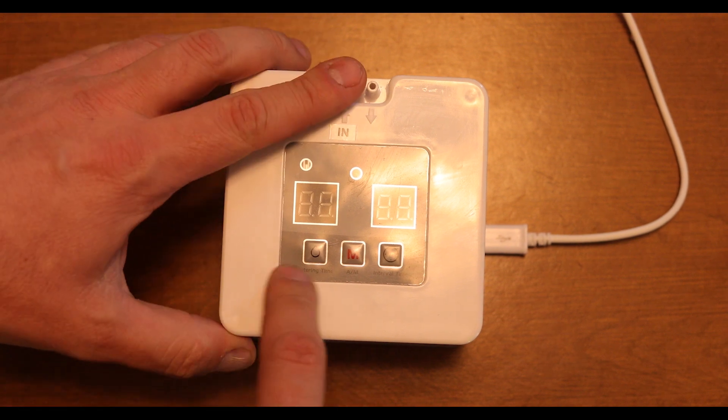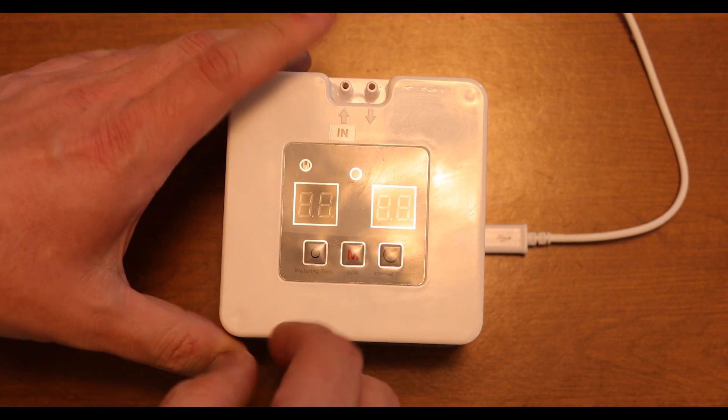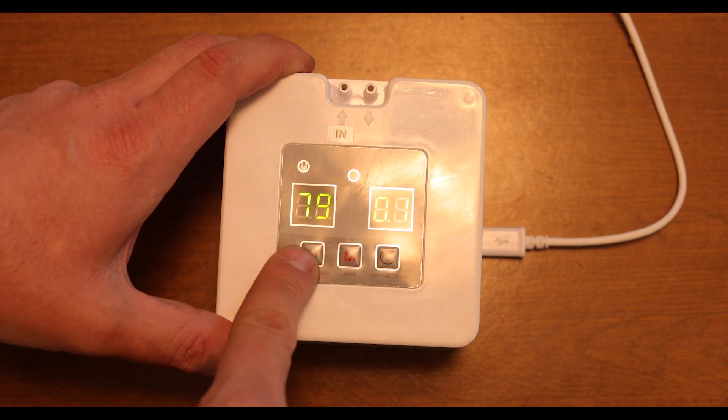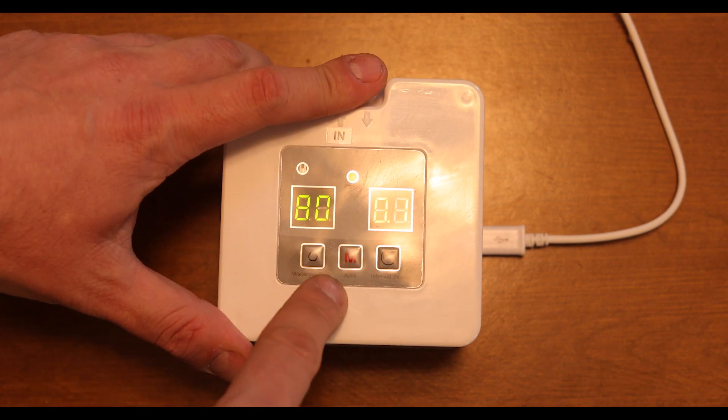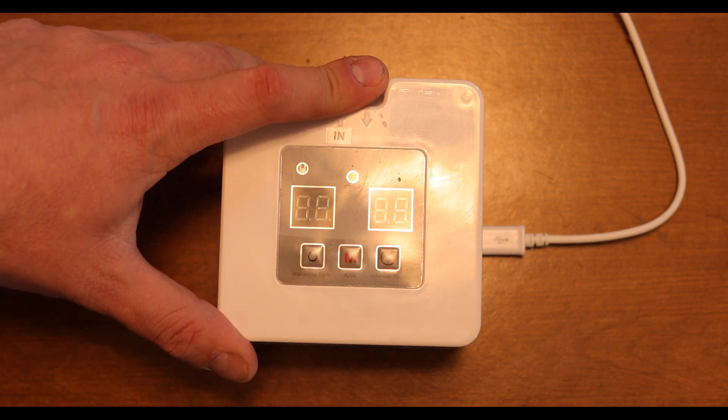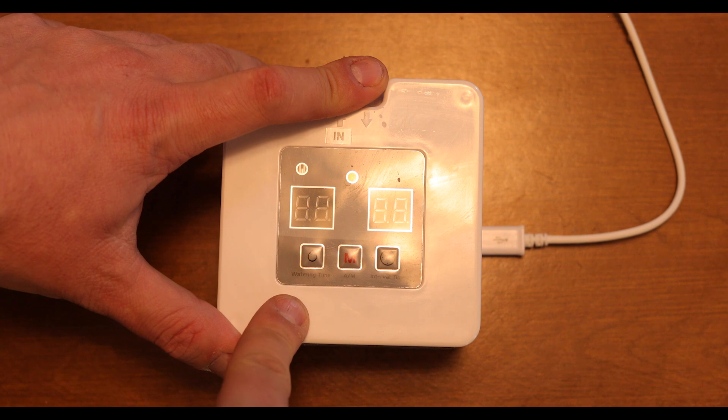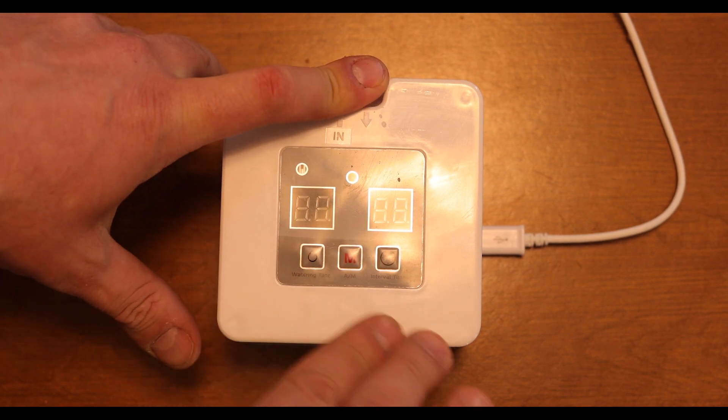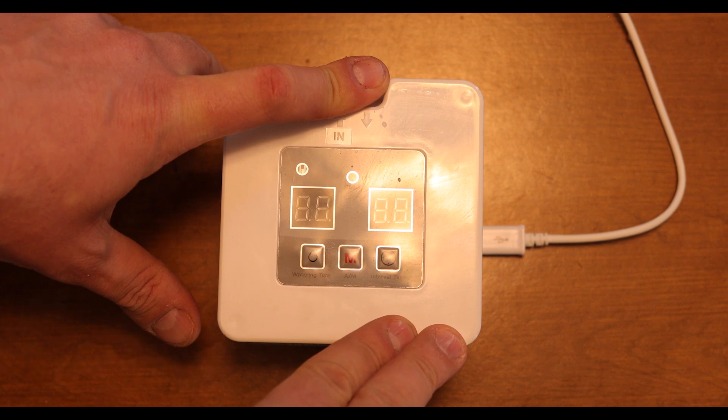So you've got three buttons here. The one on the far right is watering time, so you push it once to bring up the display and then you push it again to make adjustments. I've measured this pump to operate—this pump pumps about 100 milliliters per minute is what I've measured it at.